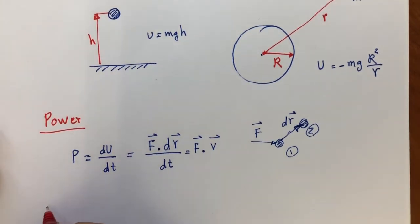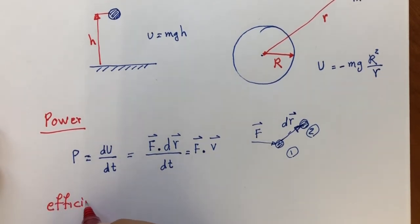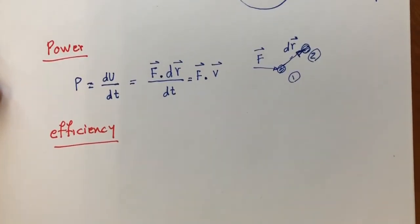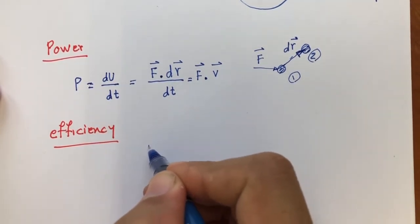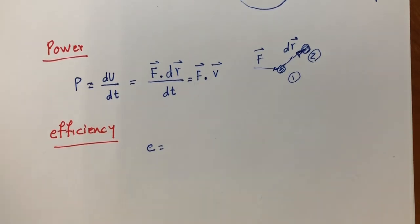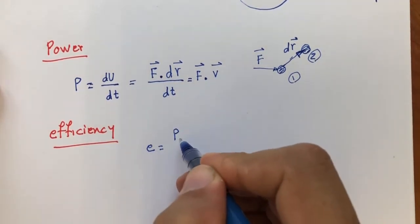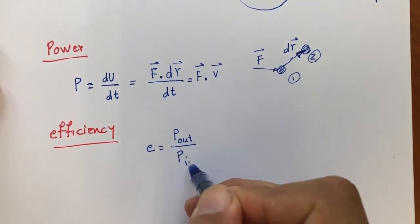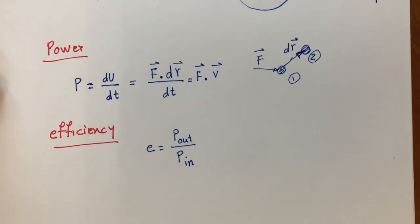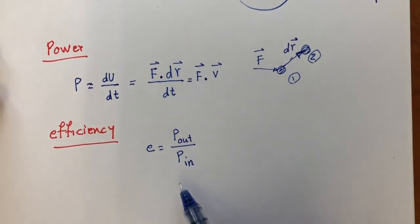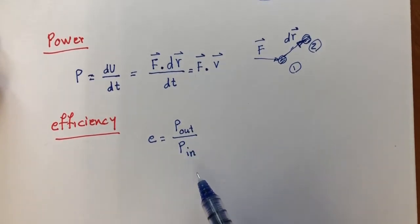The other definition is efficiency, which we usually show as ep. Efficiency is how much power you are getting from your system compared to how much power you are putting into your system — p out divided by p in — which is usually less than one unless your system is perfect. If you put energy into a system, some of that energy is going to disappear as heat, sound, or noise, so the power you get out is smaller than what you put in.